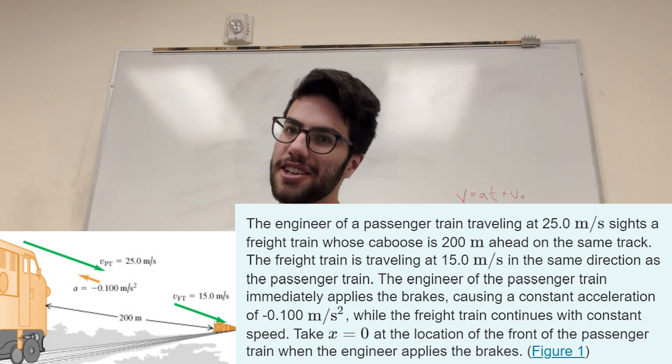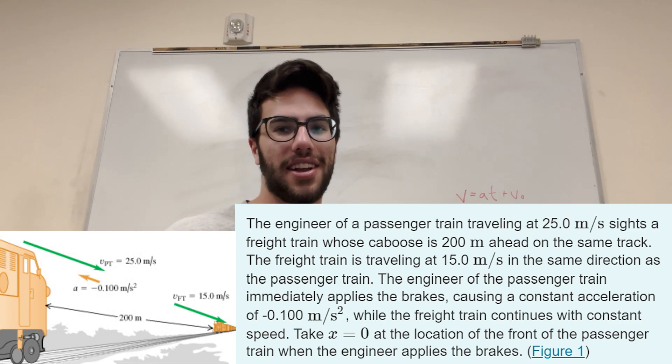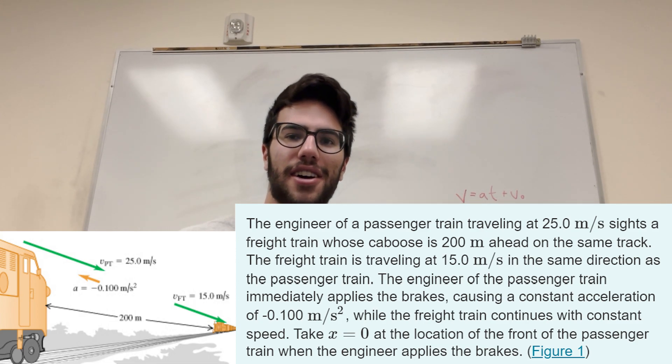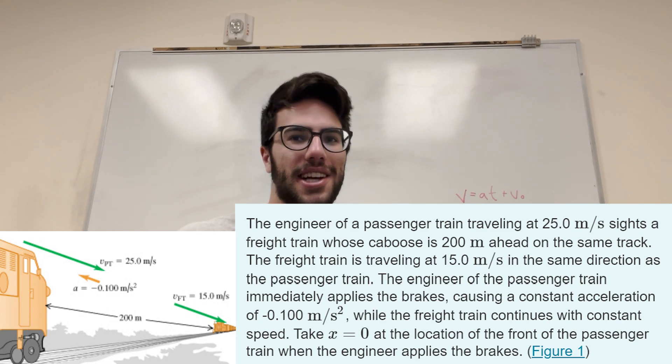There's a train, and there's another train 200 meters ahead of it. The other train is going a little slower, but the back train is decelerating. We want to know, are they going to collide, and are the cows going to witness it?